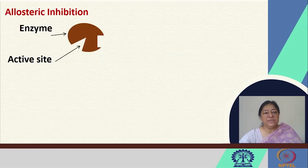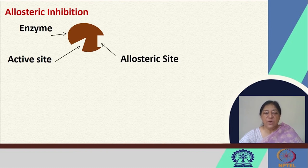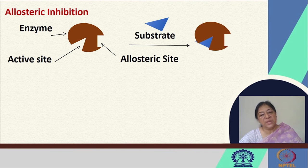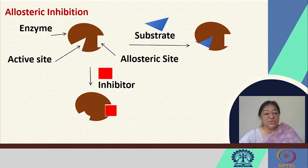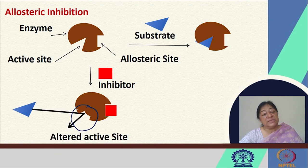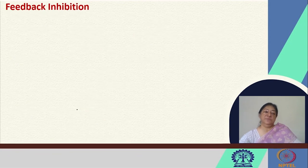Allosteric inhibition involves binding not to the active site but to an allosteric site. In this scheme, the substrate binds to the active site where it is supposed to go. However, the binding of an inhibitor to an allosteric site alters the shape of the active site and its shape complementarity, so the active site can no longer bind the substrate, resulting in inhibition.